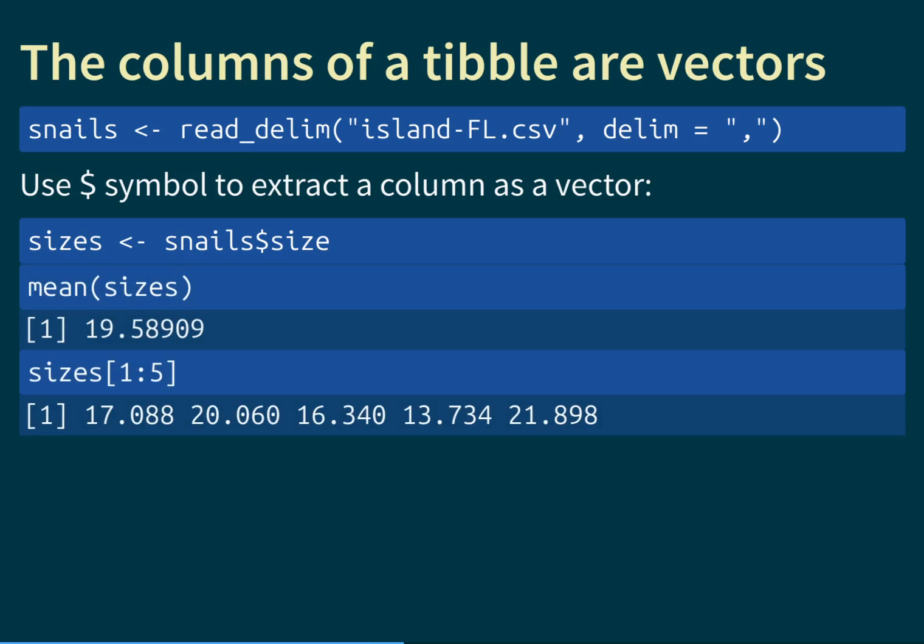We can then do all sorts of vector operations on it. For example, we can calculate the average of sizes. Or we can extract the first five entries using bracket notation — writing sizes[1:5], where 1:5 translates into a vector of one, two, three, four, and five, meaning we extract those five entries. That is what you see in the output at the bottom: the first five entries of that vector.